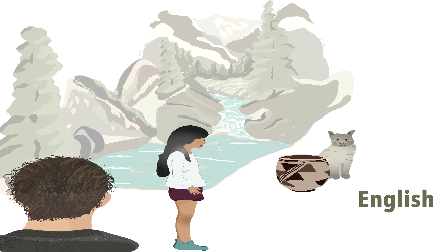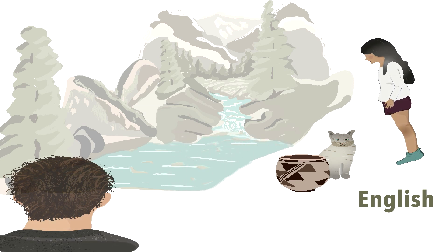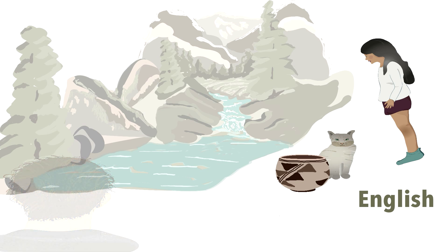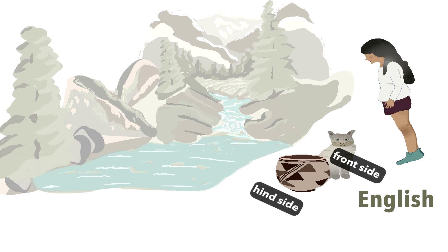Now, if we remain in the shoes of the girl but change where she is in the scenario, and someone asks where is the cat, what we'll say now is that the cat is in front of the clay pot. But why does our conception change, even though the location of the cat with respect to the clay pot has not changed at all? Because we conceive of objects as being like people facing us, what counts as the front of the clay pot has changed completely — it's now the opposite side. The cat is now between us and that side of the clay pot, so we think of it as being in front of it.